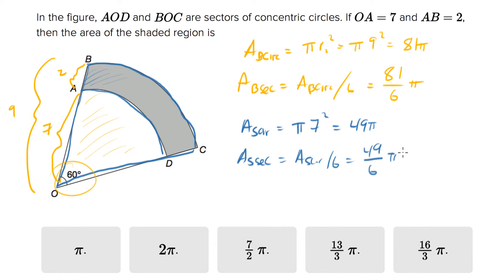Now we want to subtract the two. We want to know the area of the big sector minus the area of the small sector, which will give us the gray shaded region.